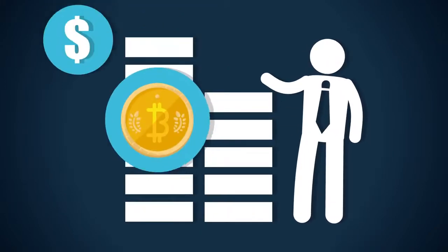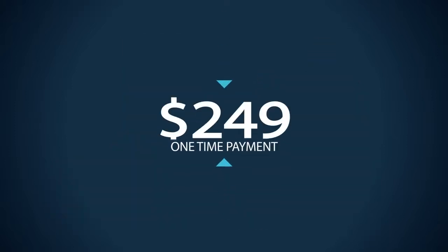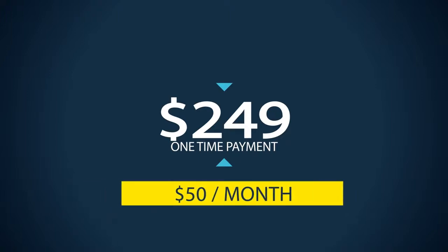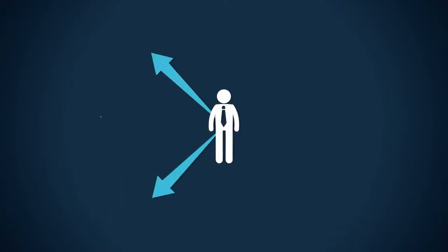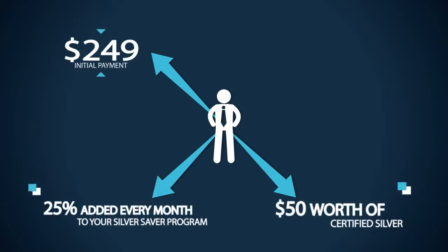The second option is to be paid to save in gold and silver by upgrading to our affiliate member program. Entry into the program is a one-time payment of $249, and then $50 per month thereon. So as soon as you join, you receive $50 worth of certified silver, and every month you are automatically adding 25% to your Silver Saver program from your $50 membership.